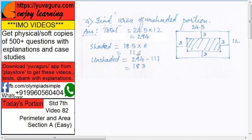Now this is the area of the shaded. Now what we want? This is of total, this is of shaded. So we want unshaded. So subtract 294 minus 111, you get 183 as a required answer.